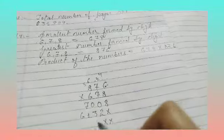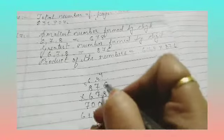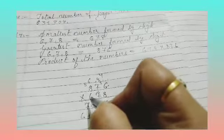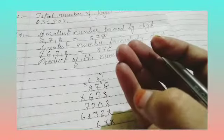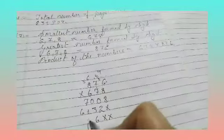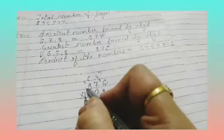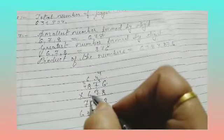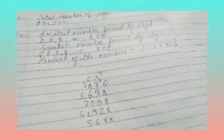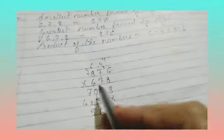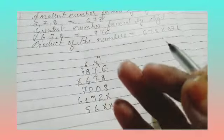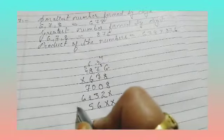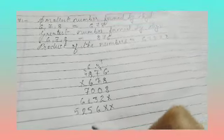6 times 6 is 36. Write 6, carry 3. 7 times 6 is 42, 43, 44, 45. Write 5, carry 4. 8 times 6 is 48, 49, 50, 51, 52.